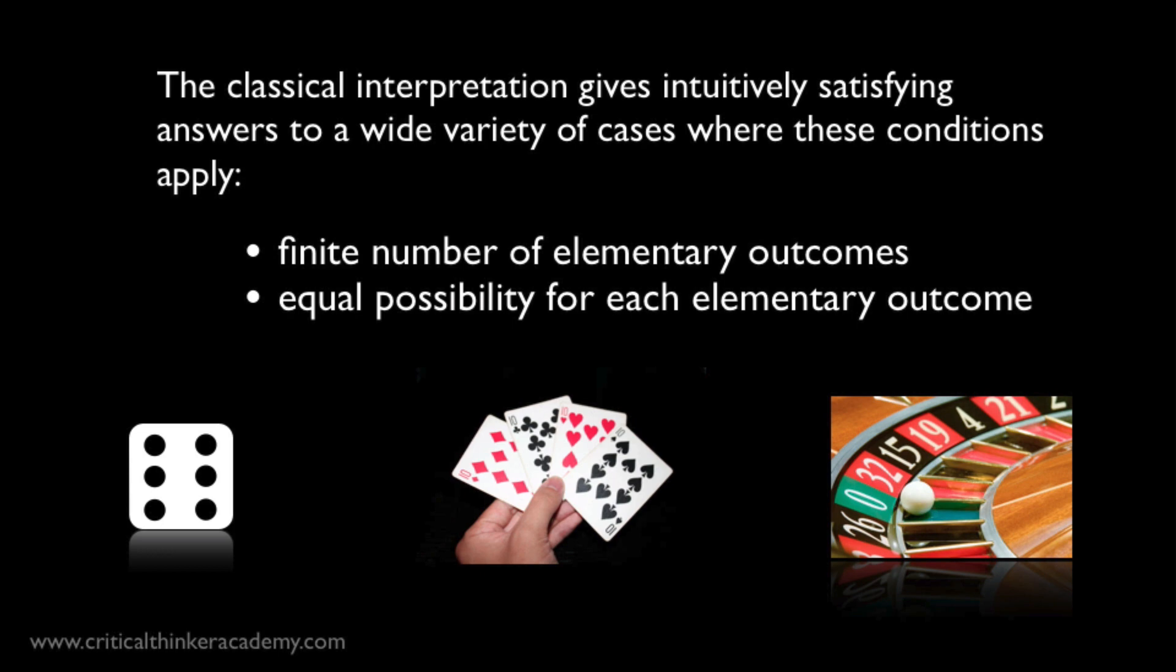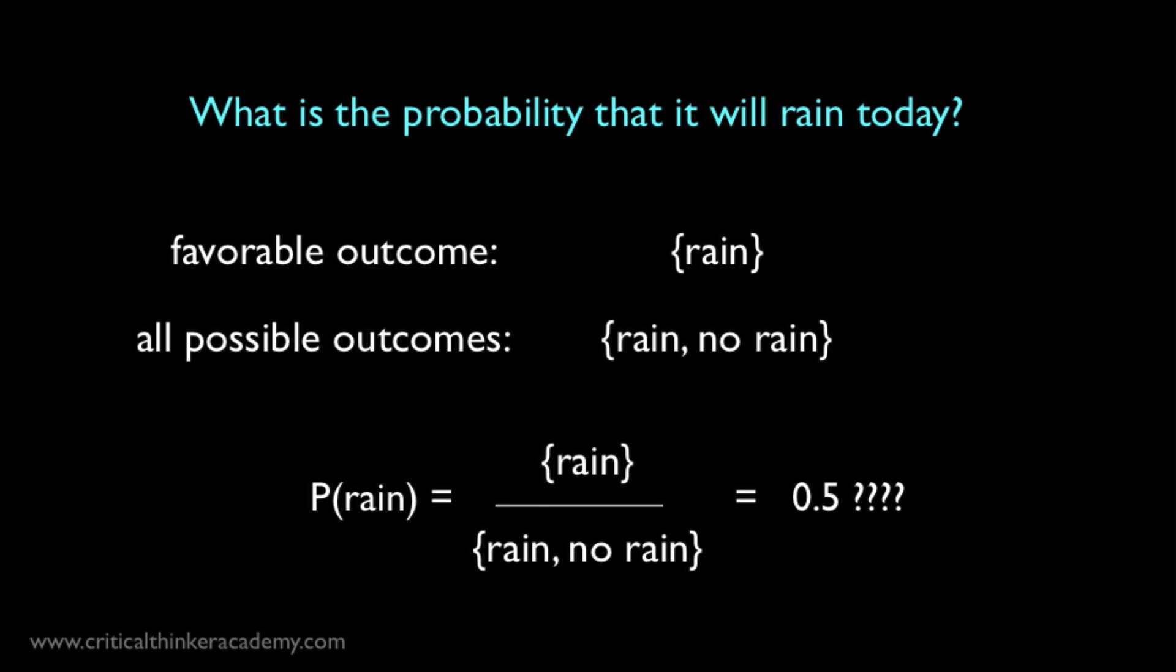So, one strength of the classical interpretation is that it gives intuitively satisfying answers to a wide variety of cases where these conditions apply, like games of chance. But it has a lot of weaknesses as a general theory of probability. Let me just lay out a couple of objections to the theory.